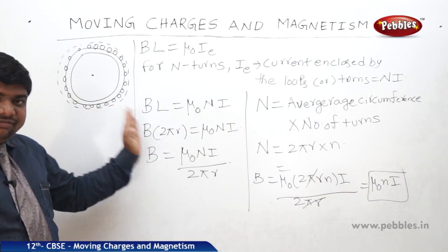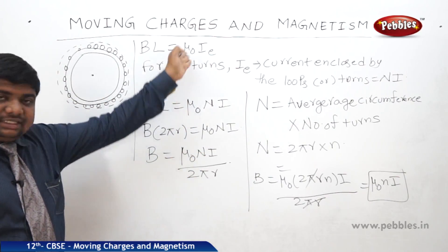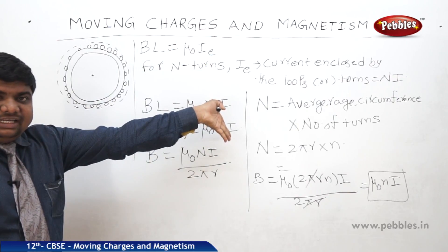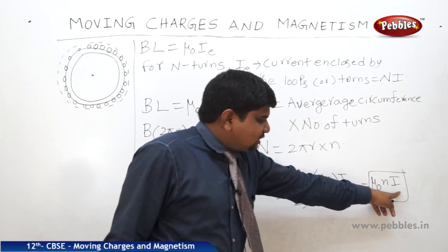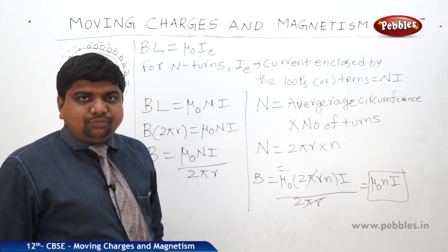This result, B equals μ₀nI, is similar to that of the solenoid. In the beginning of this concept we said that the toroid is similar to the solenoid — and with respect to this equation, it is proved.